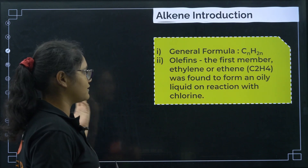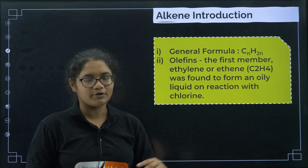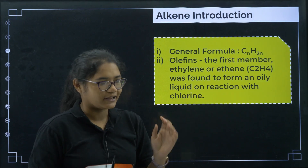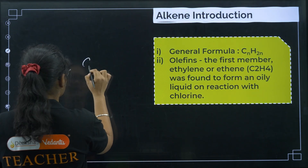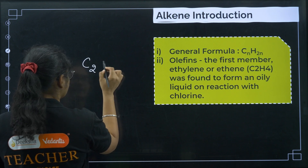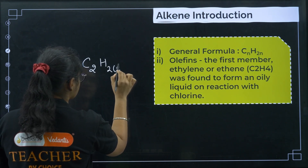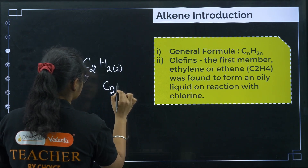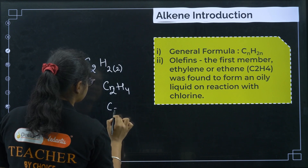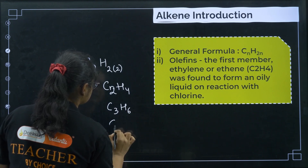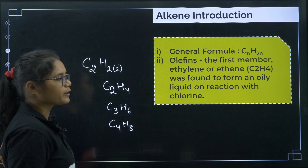Alkene's general formula is CnH2n. For example, a 2-carbon alkene will have 2×2 = 4 hydrogens, giving C2H4. Similarly, C3H6 and C4H8.